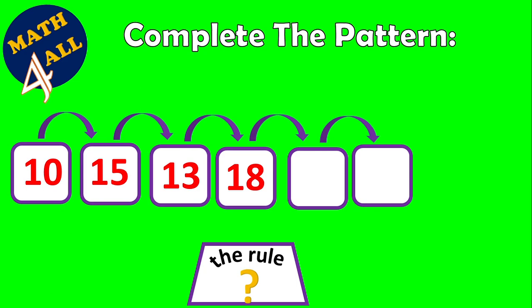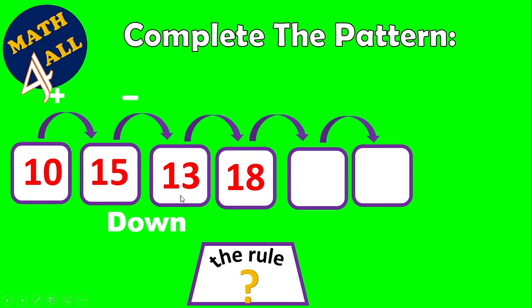The first step: ask yourself, are you counting up or down? 10 to 15 — we are increasing, so put a plus sign. 15 to 13 — 13 is less than 15, we are decreasing, counting down, so put a minus sign. 13 to 18 — increasing again, counting up, so put a plus sign. The first part of the rule is: plus, minus, plus.